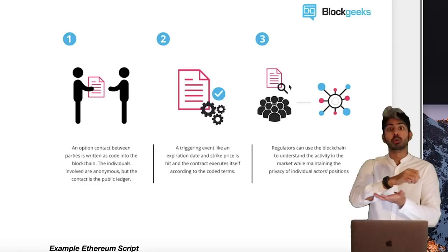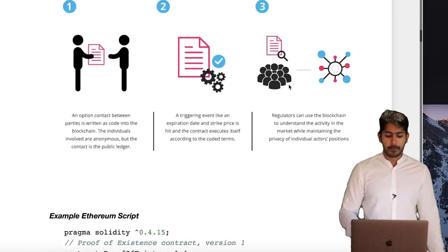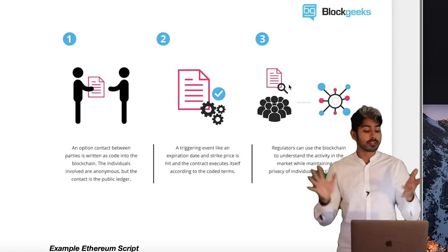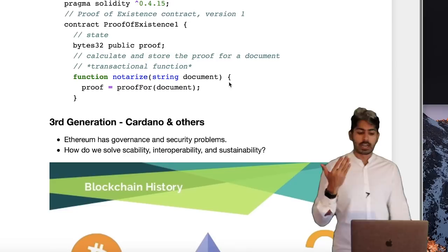This allows for unstoppable applications — applications that no one can shut down. This has a range of use cases from financial transactions to healthcare, all sorts of things. Here's an example of Ethereum script — Solidity. It's much more readable, looks kind of like Python. This is a proof-of-existence script in Ethereum, with one function returning another function.